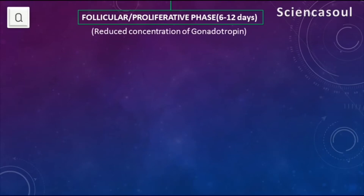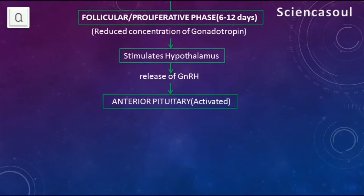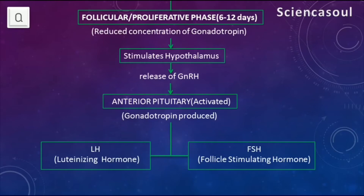The second phase is the follicular phase, which lasts for six to twelve days. In this phase, reduced concentration of gonadotrophins stimulates the hypothalamus to release GnRH, or gonadotrophin-releasing hormones.